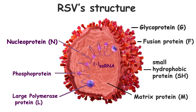Finally, the phosphoprotein is critical in orchestrating the virus's replication and evasion strategies. Each of these proteins plays a pivotal role in RSV's life cycle, making them prime targets for therapeutic interventions.